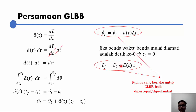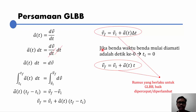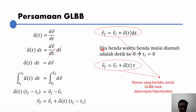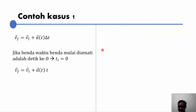Bagaimana cara kita menjelaskan ke siswa supaya tidak keliru lagi? Fisika itu tidak rumit kalau kita bisa memahami dengan baik. Terkadang kita menyederhanakan konsep fisika, tapi penyederhanaan itu justru keliru dan akan turun-temurun. Jadi kita batasi agar anak yang kita ajar ke depannya tidak keliru konsepnya. Mari kita ke kasus yang sederhana dulu.